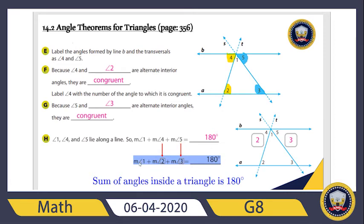Look at angles 4, 1, and 5 — their sum is 180 degrees because they make up a straight angle. So 4 plus 1 plus 5 equals 180 degrees. Now, replacing angle 4 with angle 2 and angle 5 with angle 3, we get: measure of 1 plus measure of 2 plus measure of 3 equals 180 degrees. This is exactly the sum of angles inside the triangle, proving it equals 180 degrees using parallel lines and transversals.